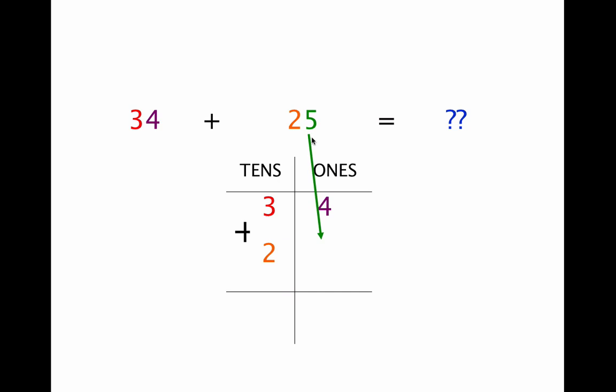Now let's look at another way to solve the same problem. Again, we want to add 34 and 25. So let's create a chart with two columns. The first column shows tens, and the second column shows ones. In the number 34, we have 3 tens, so we write a 3 in the tens column. And in the number 34, we have 4 ones, so we write a 4 in the ones column. Now in the number 25, we have 2 tens, so we write a 2 in our tens column. And we have 5 ones, so we write a 5 in our ones column.